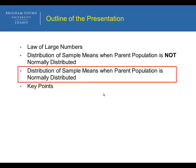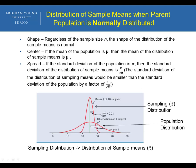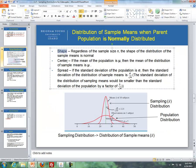Now let's discuss the distribution of sample means when the parent population is normally distributed. For center and spread, the formulas are the same: if the population mean is mu, then the mean of the distribution of sample means is also mu; and the standard deviation of the distribution of sample means is sigma divided by the square root of n, where sigma is the population standard deviation. The key difference: when the parent population is normally distributed, regardless of sample size n, the shape of the distribution of sample means is always normal.